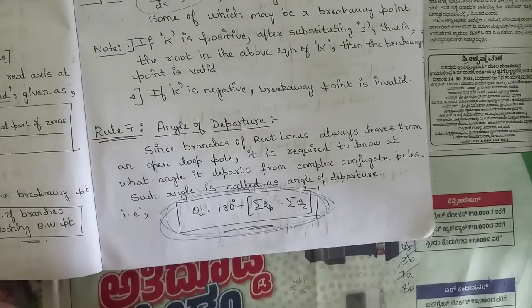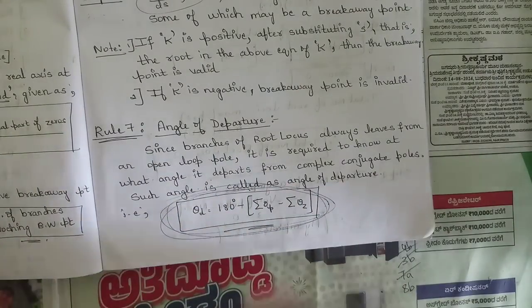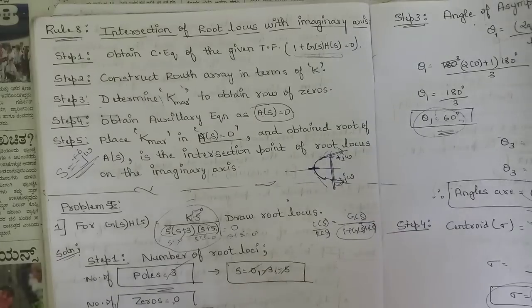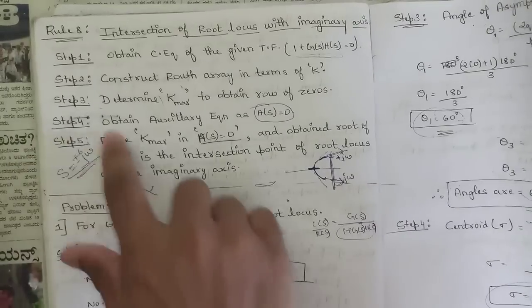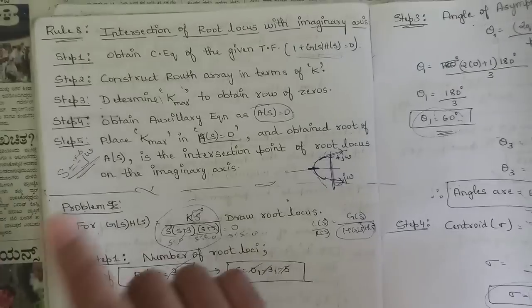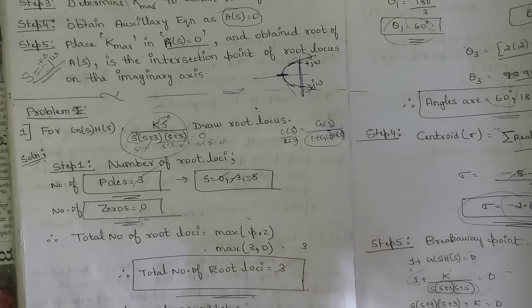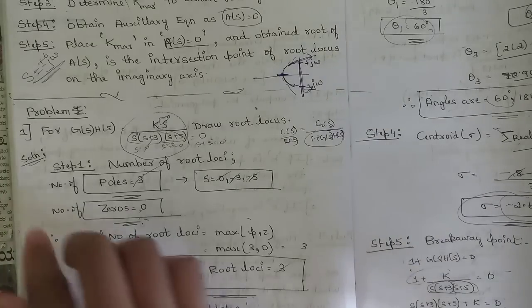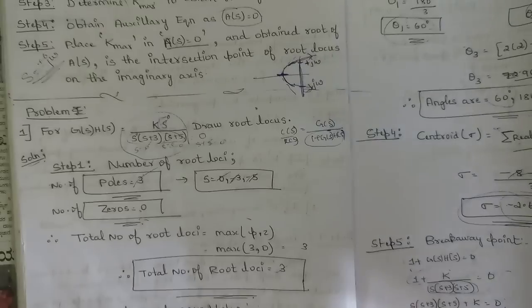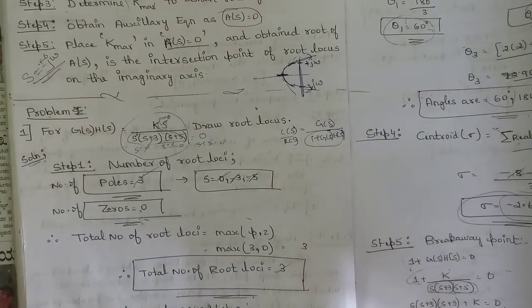A breakaway point lying within the root locus part is a valid breakaway point; otherwise it is invalid. Angle of departure comes into play whenever we have complex poles — from those complex poles we draw the angle of departure. Step eight is the intersection of the root locus with the imaginary axis: substitute s = ±jω and solve. If no imaginary term is obtained, there is no point of intersection. Six different kinds of root locus problems are available in our channel playlist.